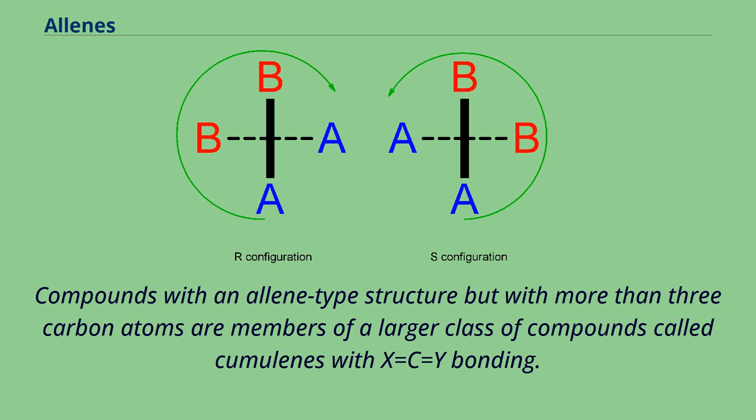Compounds with an allene-type structure but with more than three carbon atoms are members of a larger class of compounds called cumulenes with X=C=Y bonding.